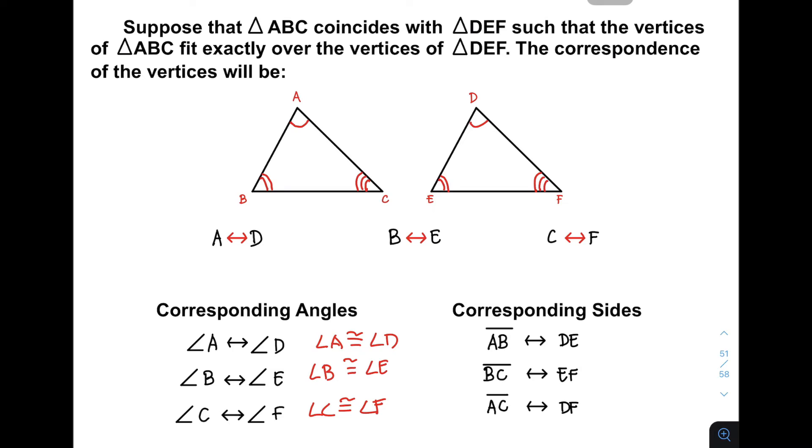If AB corresponds to DE, we can say that they are congruent. We will use one marking. You can say that AB is congruent to side DE.